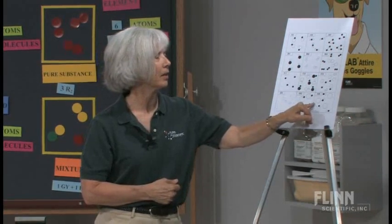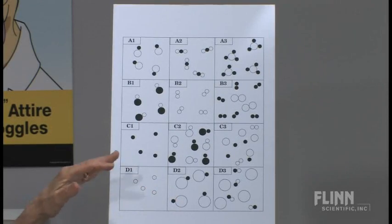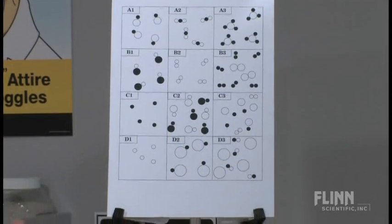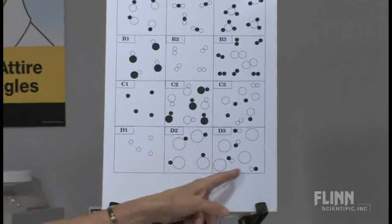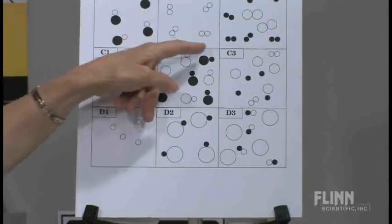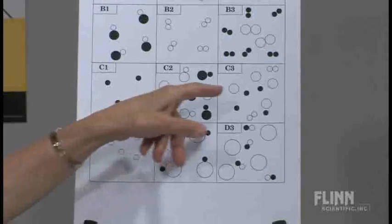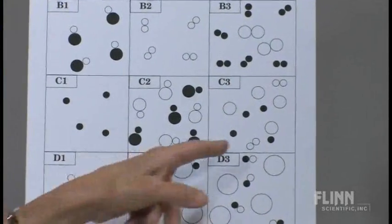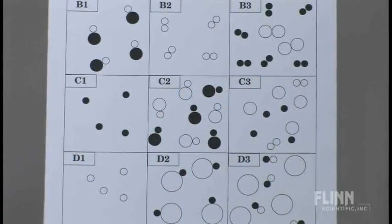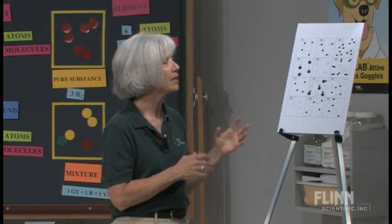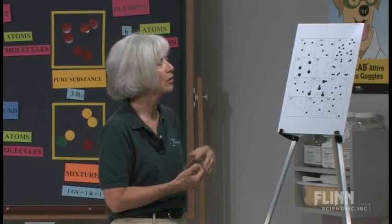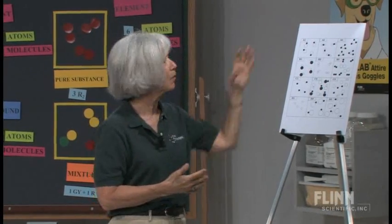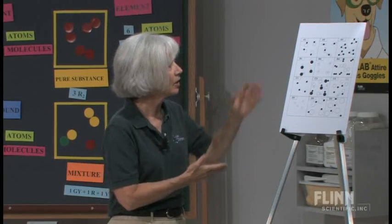So you might say, okay, in the D line here, on your board write, which are mixtures? Write D1 or D2 or D3, and there could be more than one answer. So they see that this would be the mixture. Or you can say in C3, tell me how many atoms are in there. And they'd count all the circles. That's easy. How many molecules? Just two. And so you could go through a variety of things and asking them about what's a pure substance, what's a mixture, how many atoms, how many molecules.